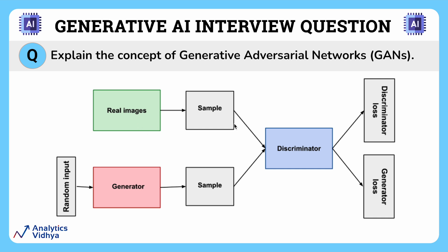The discriminator network, on the other hand, tries to distinguish between real and generated samples. This network is trained with real samples from the training data and generated samples from the generator. The discriminator's goal is to correctly classify real data as real and generated data as fake.